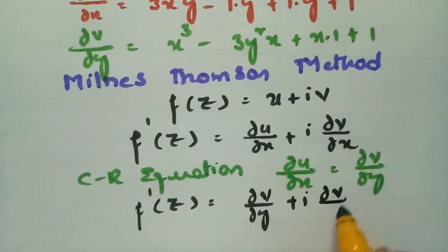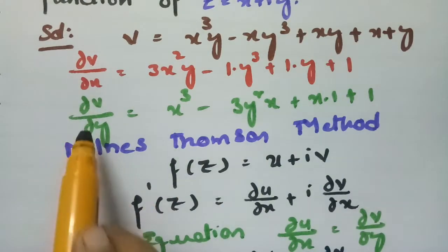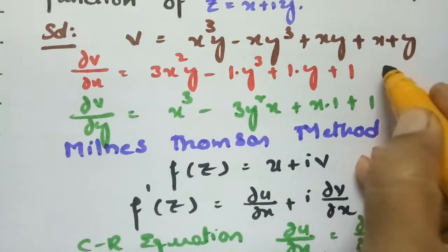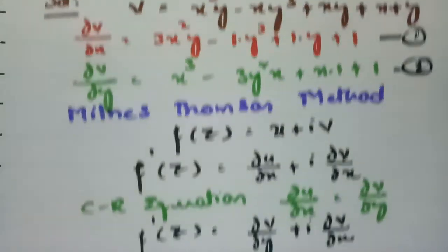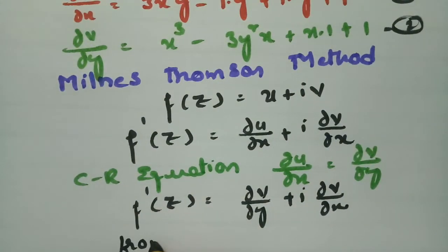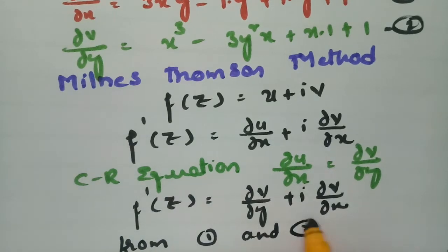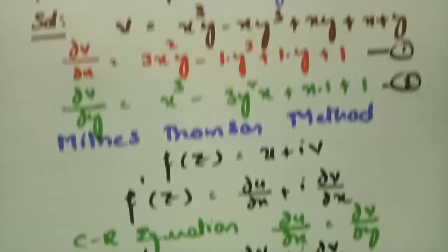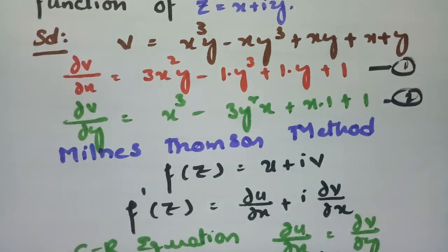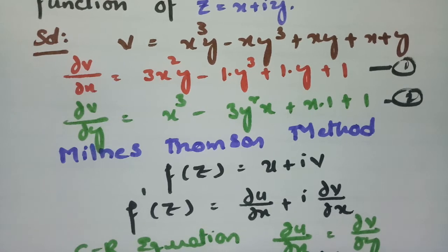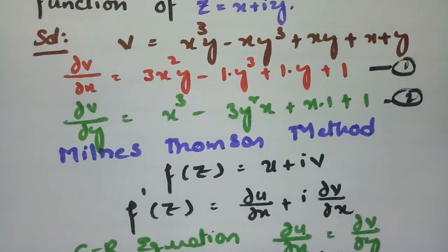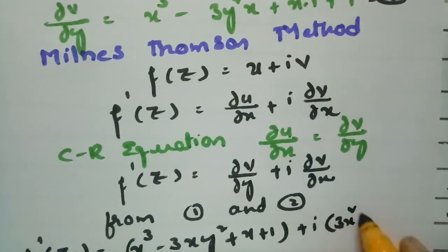We have the ∂v/∂x value and the ∂v/∂y value, so I am going to substitute. From equation one and two I will substitute the values. Therefore f′(z) is equal to: ∂v/∂y gives x³ − 3xy² + x + 1, plus i times ∂v/∂x which gives 3x²y − y³ + y + 1.